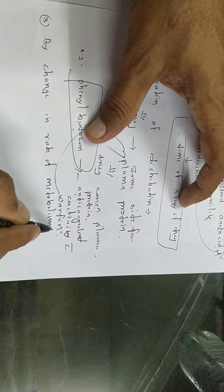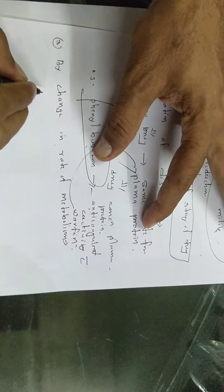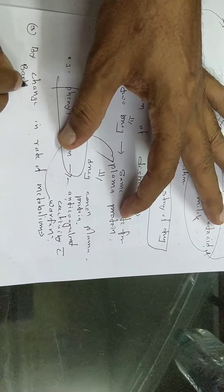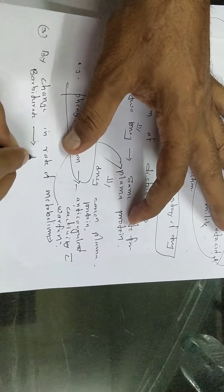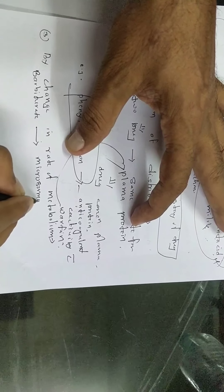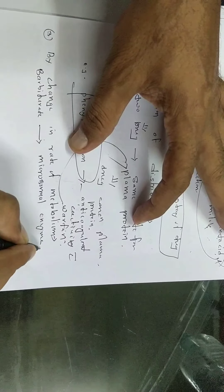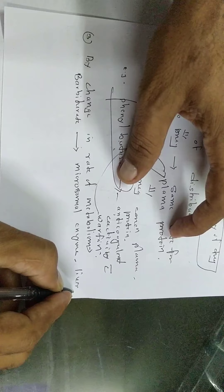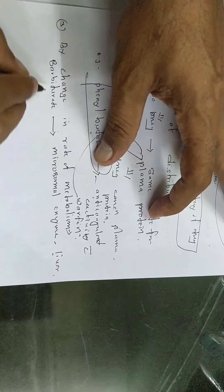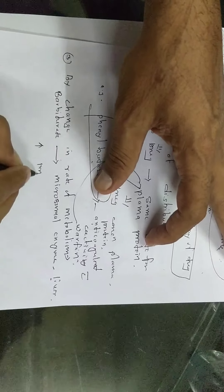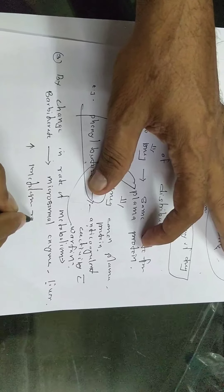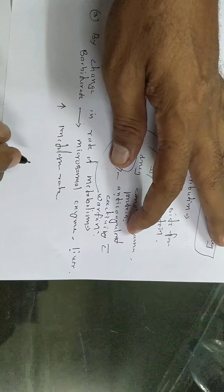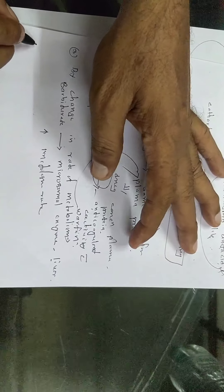Third: change in rate of metabolism. Barbiturates increase the activity of microsomal enzymes in the liver, thereby increasing the rate of metabolism in the liver. The drug is then metabolized quickly, reducing its duration of action at the site.